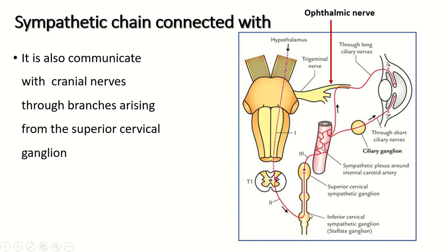The medial branch of the sympathetic ganglion — this is the superior cervical sympathetic ganglion. This nerve forms a plexus around the internal carotid artery and also joins some cranial nerves. This nerve joins with the ophthalmic nerve and, through the long ciliary nerve, is distributed to the eye.